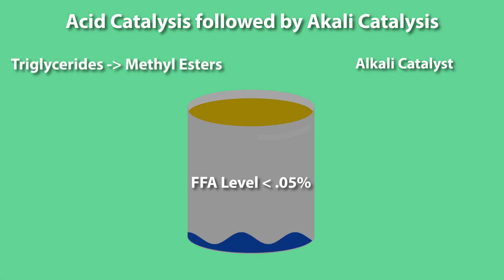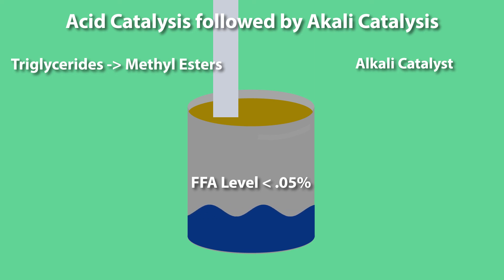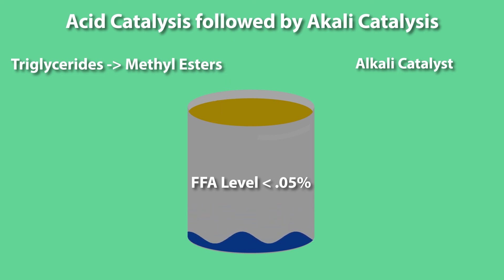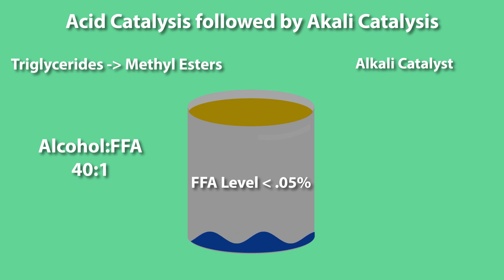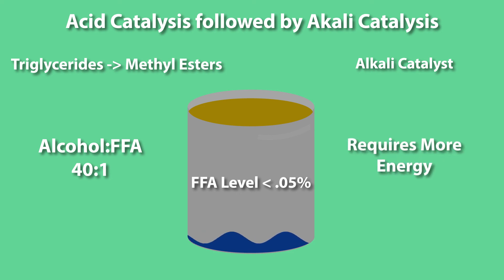Water formation is still a problem during the pre-treatment phase. One approach is to simply add so much excess methanol during the pre-treatment that the water produced is diluted to the level where it does not limit the reaction. Molar ratios of alcohol to FFA as high as 40 to 1 may be needed. The disadvantage of this approach is that more energy is required to recover the excess methanol.